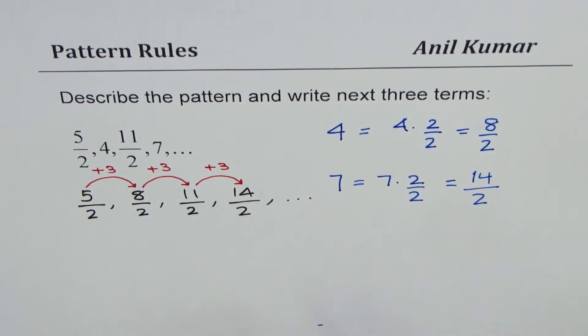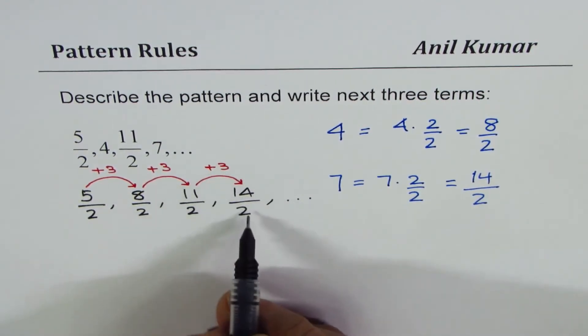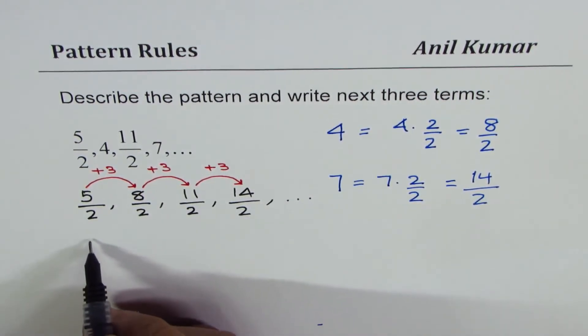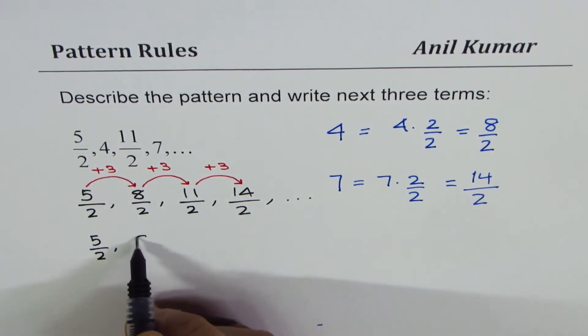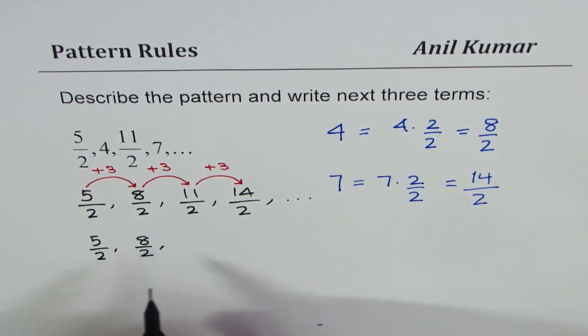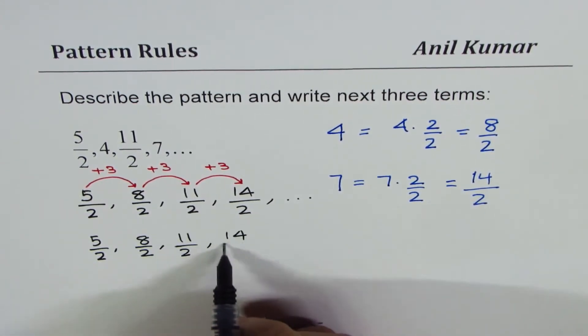So we can write the next 3 terms now. What we need to do is add 3 by 2. So if I add 3 by 2, what do I get? Let me rewrite this pattern. So we have 5 over 2, 8 over 2, 11 over 2, 14 over 2.